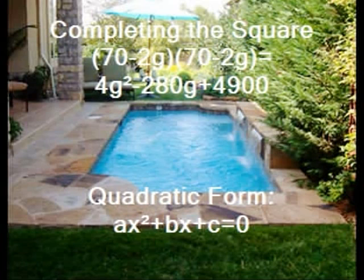This is in quadratic form since it follows the form ax² + bx + c = 0. To find the pool's dimensions, the quadratic formula — x equals negative b plus or minus the square root of b² - 4ac, all divided by 2a — will be used to solve 4g² - 280g + 2,450 = 0. When you plug in those numbers, the pool will be 49.5 feet by 49.5 feet.